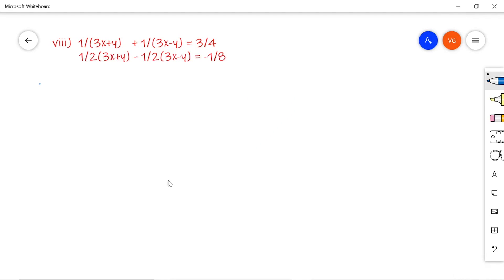This is the last subsection. The given set of linear equations are 1 by 3x plus y plus 1 by 3x minus y is equal to 3 by 4.